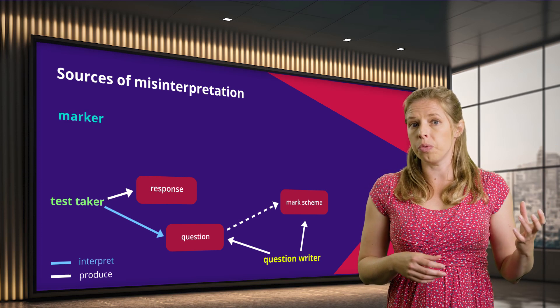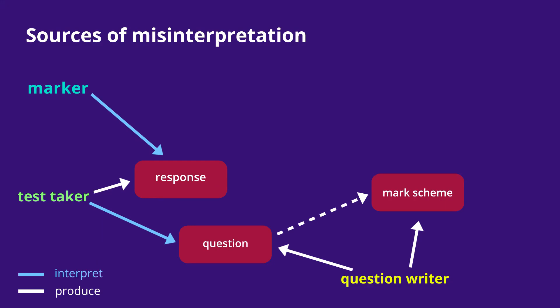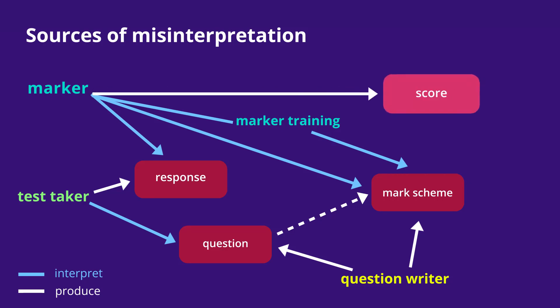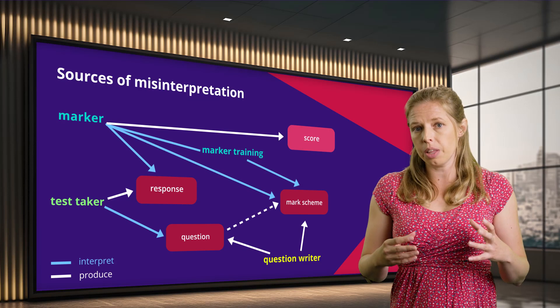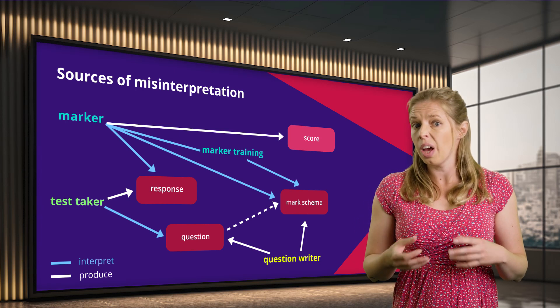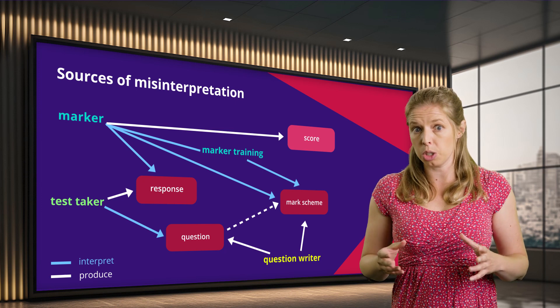That marker then has a really difficult task of looking at the student's response and trying to interpret what the student meant, and infer what the student knows, understands and can do from their written response — without being able to ask the student if anything is unclear — as well as looking at the mark scheme to make sure they've interpreted it correctly. Once they've done all of that, they come up with a final score or mark which hopefully reflects what the student knows, understands and can do. As you can see, there's quite a lot of interpretation happening in this process, and if there is a misinterpretation at any step along the way it might mean that the final mark doesn't truly reflect what the student knows, understands and can do — and would be classed as measurement error. So it's really important for us to try and minimise that ability to misinterpret as much as we can here at AQA.